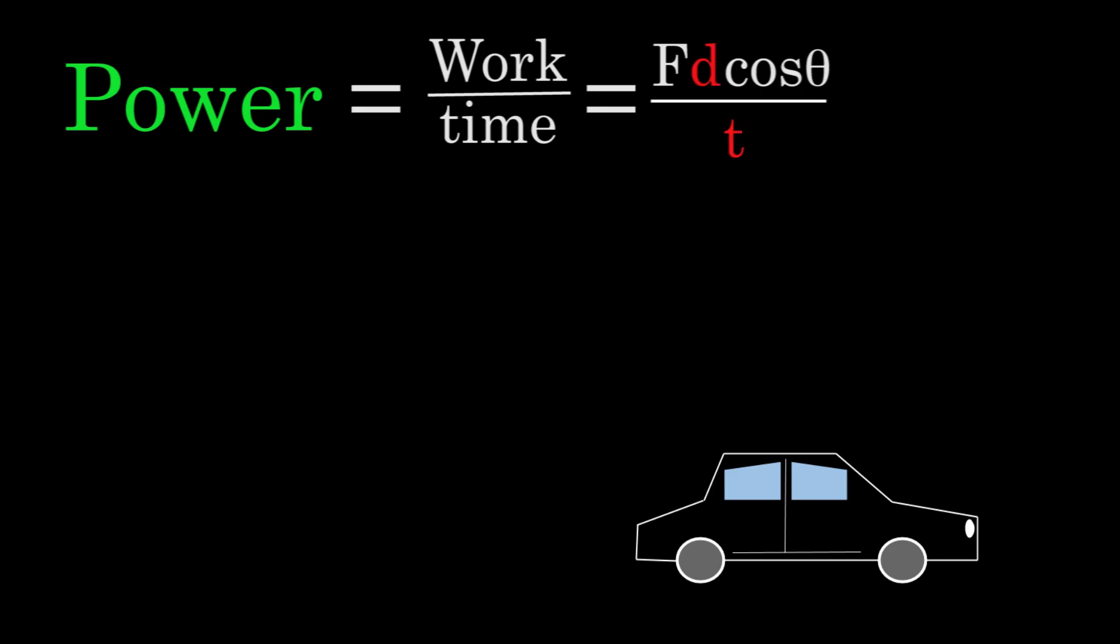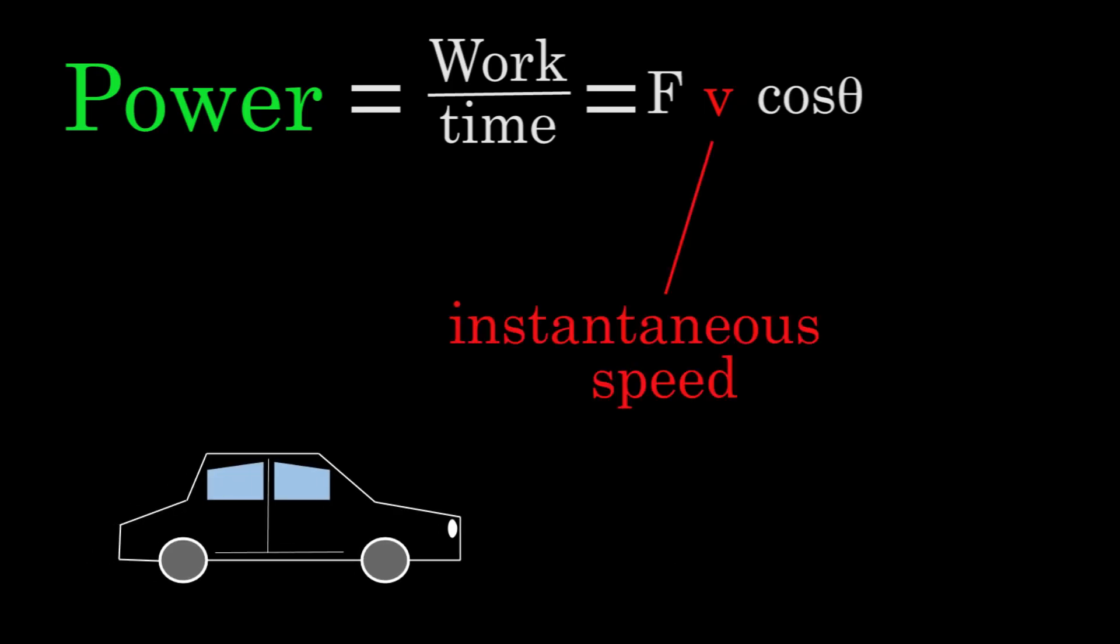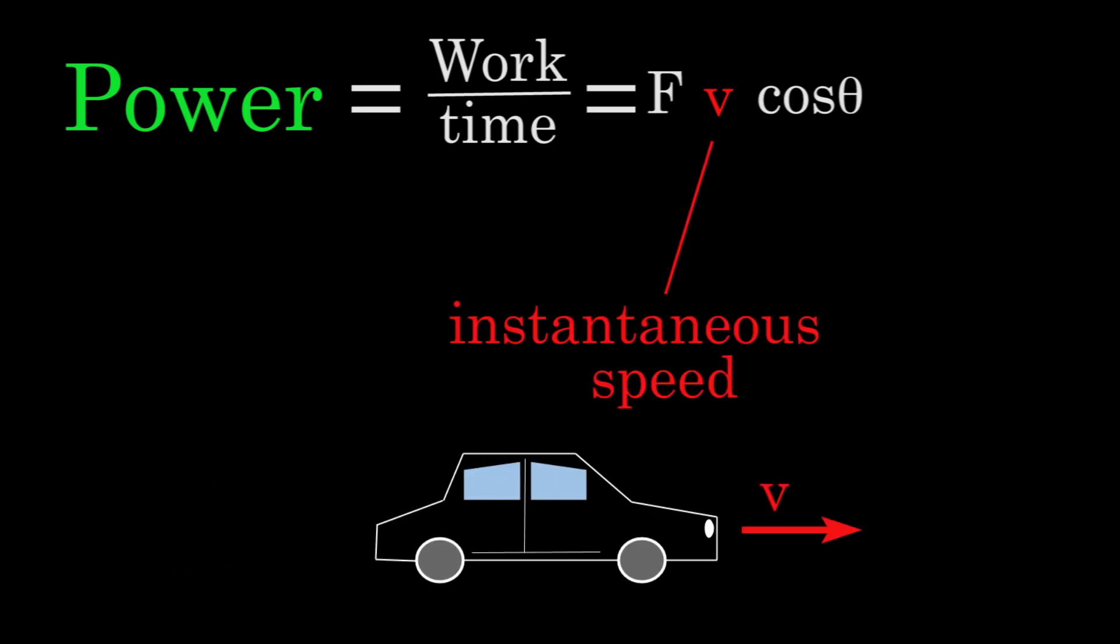Something that you might notice is that now we have distance per time in this formula. So let's isolate the distance per time. Distance per time is just the speed, so I can replace d over t with v in this formula. And if you plug in the instantaneous speed of the car at a given moment in time, you'll be finding the instantaneous power output by the force on the car at that particular moment in time.